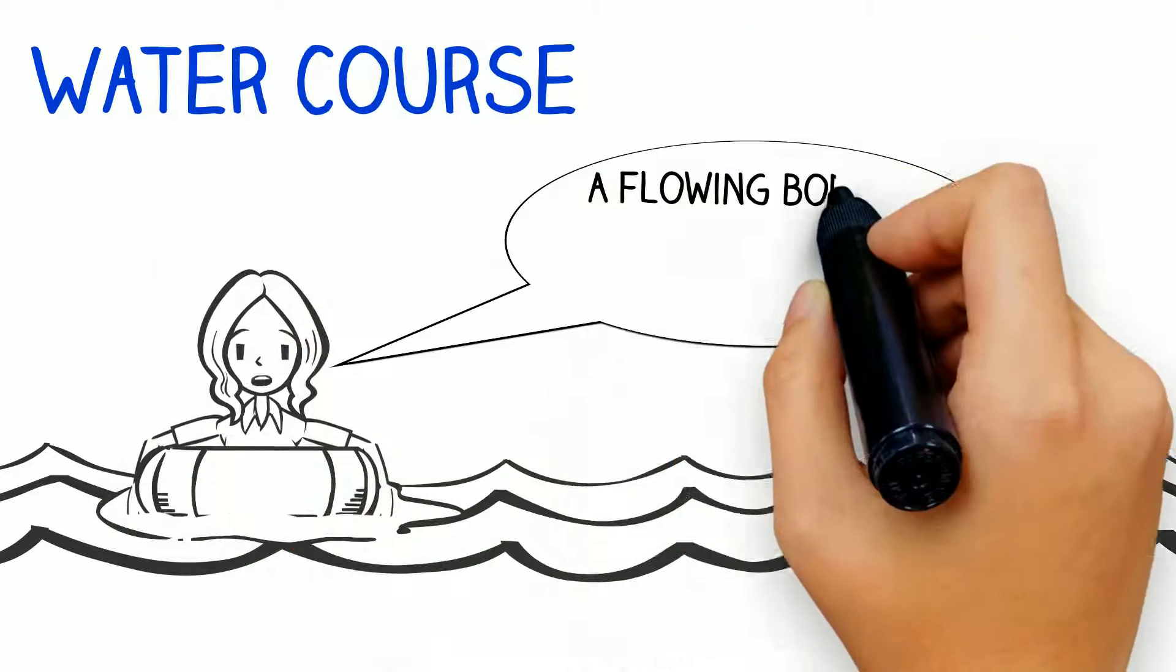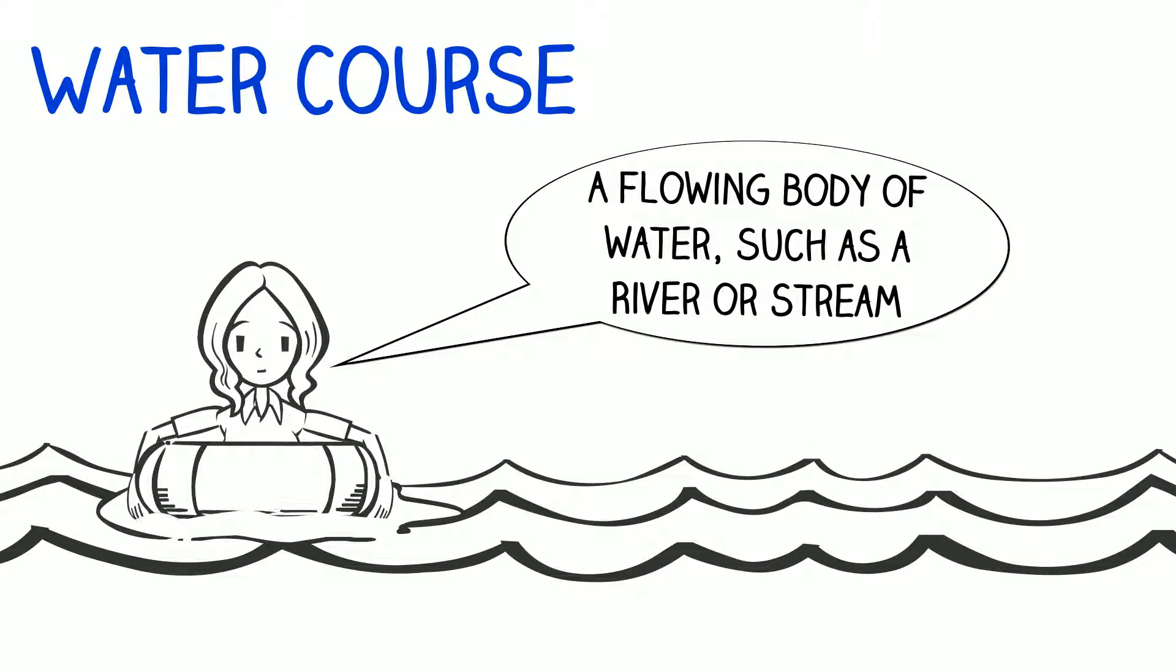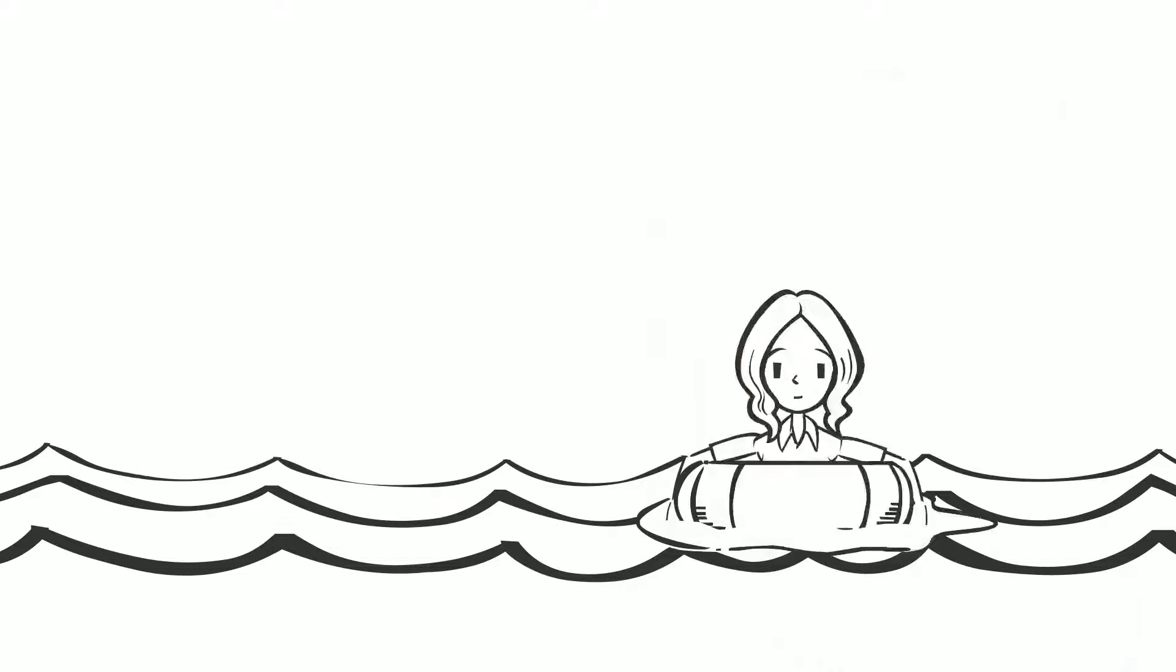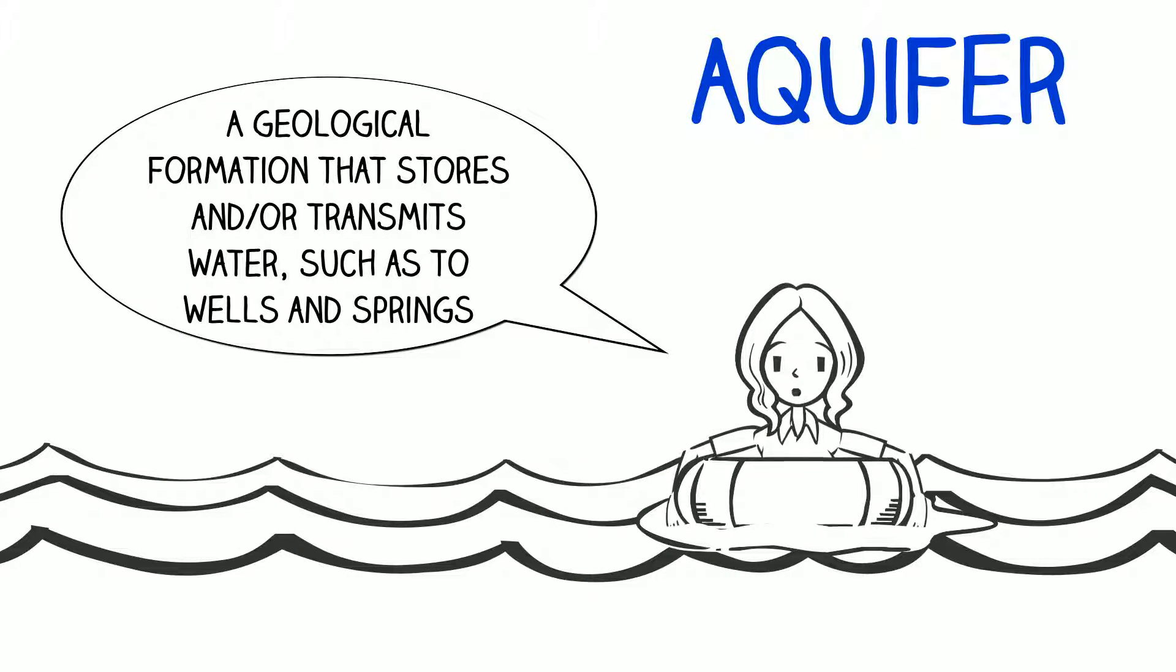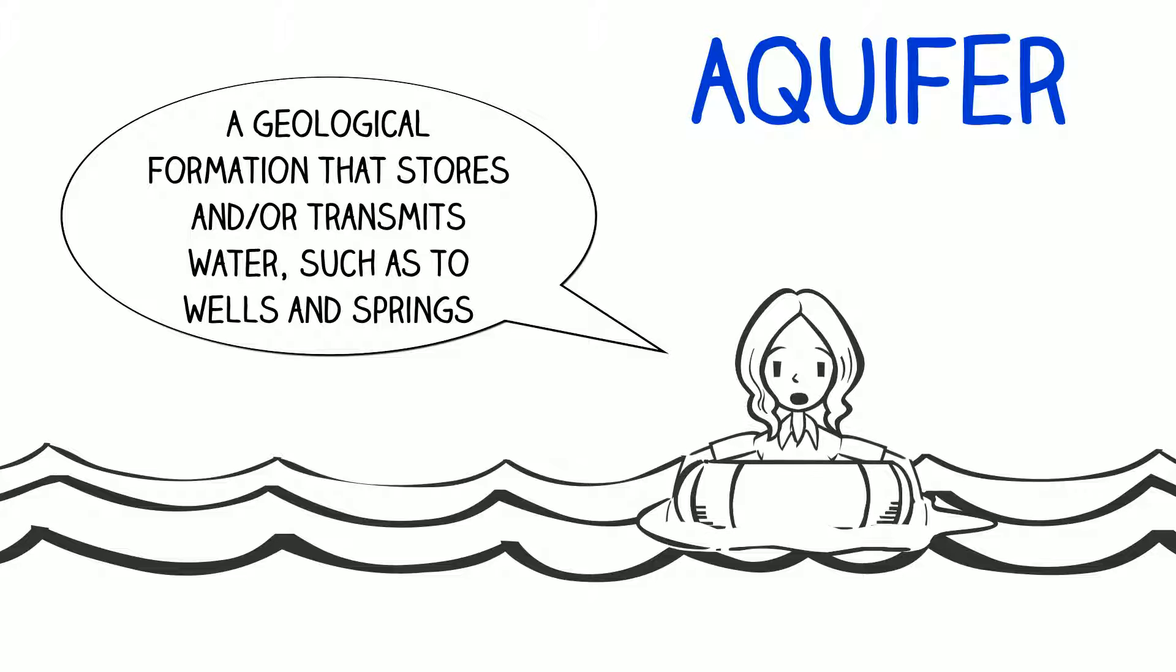Water course is a flowing body of water, such as a river or stream. An aquifer is a geological formation that stores and transmits water, such as to wells and springs.